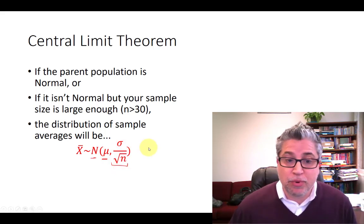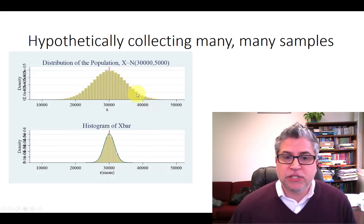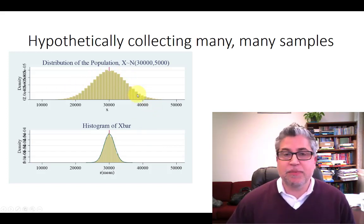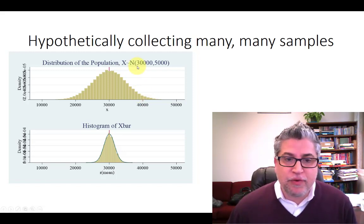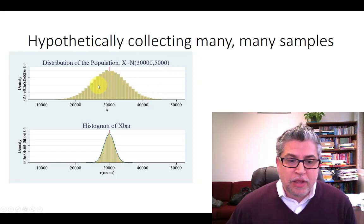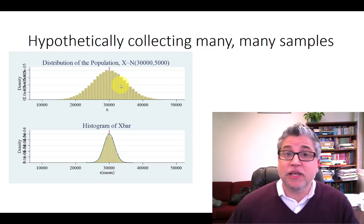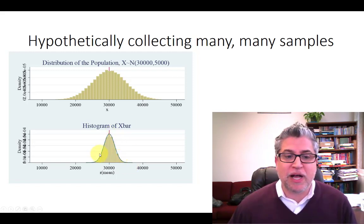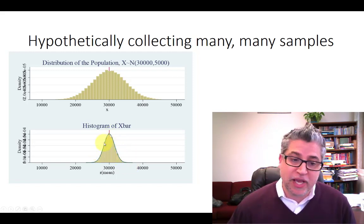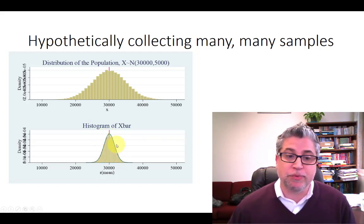So let's see how this works in practice. Here we sample from a population, and this is supposed to be conveying something like income. And if we have an income of $30,000 and a standard deviation of $5,000, then we might take a sample of however many observations and calculate one particular sample average. But it's one from a whole range of possible sample averages that we could have taken, and that range is given by this distribution.